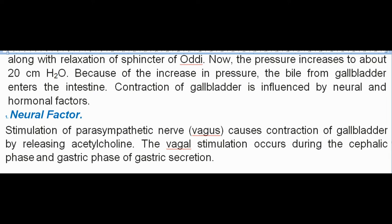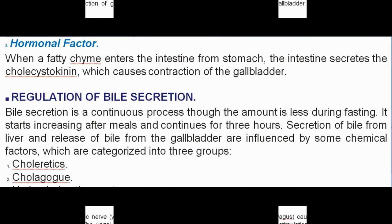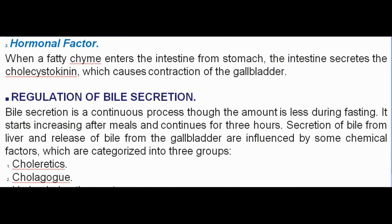Neural factor: stimulation of the parasympathetic nerve causes contraction of the gallbladder by releasing acetylcholine. Vagal stimulation occurs during the cephalic phase and gastric phase of gastric secretion. Hormonal factor: when fatty chyme enters the intestine from the stomach, the intestine secretes cholecystokinin, which causes contraction of the gallbladder.